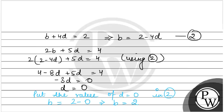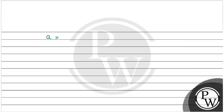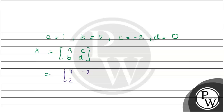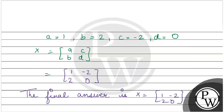Now we have all values: a = 1, b = 2, c = -2, and d = 0. So the matrix X equals [[1, 2], [-2, 0]]. The final answer is X = [[1, -2], [2, 0]]. Hope you understood it well, best of luck.